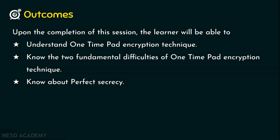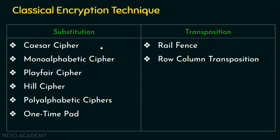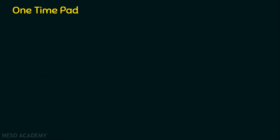We know classical encryption techniques consist of the substitution technique and the transposition technique. We are now at the last substitution technique, which is the one-time pad. In the last lecture, we saw the Vernam cipher, proposed by Gilbert Vernam, which uses repeating keywords. We confirmed that if a repeating keyword is used, it lacks security because the code can be easily broken. That's why we move on to the next technique, the one-time pad.